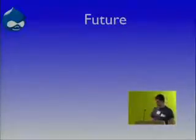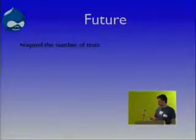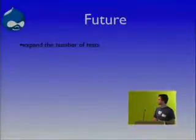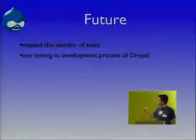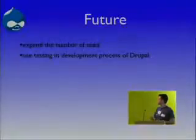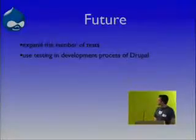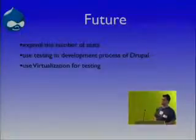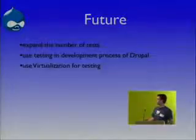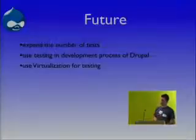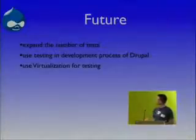What does the future hold for this unit test automation? We need to expand the number of tests, because right now there is just a small number that tests only the core part of Drupal and only the most important features. Unfortunately, automatic testing in everyday Drupal development is not done yet — we had a lot of problems integrating with the issue queue and with Drupal itself. One of the most important future features is using virtualization for testing, which would mean you could test your patch on MySQL 5, 4, and 3 all at once. You wouldn't have to build your own environments; it would be handled on a server automatically.